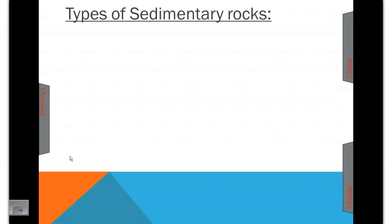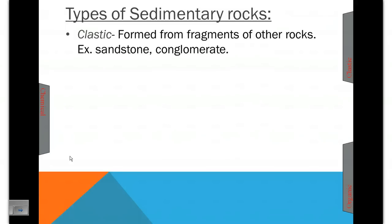There's three different types of sedimentary rocks that we discussed in class today. Clastic rocks form from fragments. Clastic means fragment of other rocks. Some examples are sandstone and conglomerate. The conglomerate is like the sample I showed you that I got at Slide Mountain when I was climbing there.